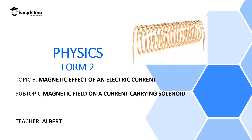Now, what if you have a conductor which is not straight — a conductor which is a solenoid? A solenoid is a coil of insulated copper wire. If you have a solenoid carrying current, we are going to use Fleming's right-hand grip rule for a solenoid, and we will find that the solenoid behaves like a magnet with a north pole and a south pole.